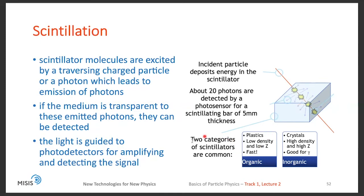Typically, we have two categories of scintillators. Organic, like for example plastics, which have low density and low Z and are very fast. Or inorganic, typically crystals with high density and high Z, good for high energy photons.